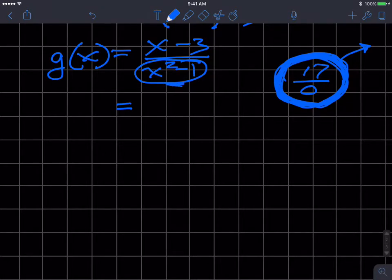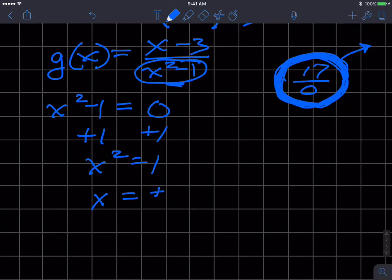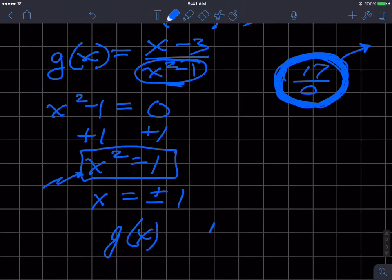So how do we do that? We take x squared minus 1, set it equal to zero, and we can solve for x to determine what values create a denominator of zero. So I'm going to add 1 to both sides. I'm going to have x squared equals 1. I'm going to take the square root of both sides, which means I have x equals plus or minus 1, because both 1 and negative 1 will make this equation true. So that means this function g(x) has a domain that's all real numbers.